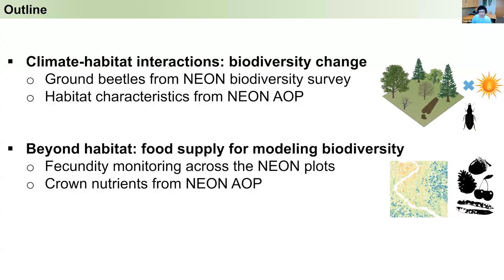Today's talk focuses on two topics. NEON really offers amazing resources for ecological research by providing consistent and long-term data across diverse ecosystems at a continental scale. Through standardized data collection and state-of-the-art instrumentation, NEON enables ecologists to understand and predict future environmental change. The first example focuses on the role of AOP-derived habitat characteristics, and the second example aims to quantify the fundamental role of food supply in biodiversity change.